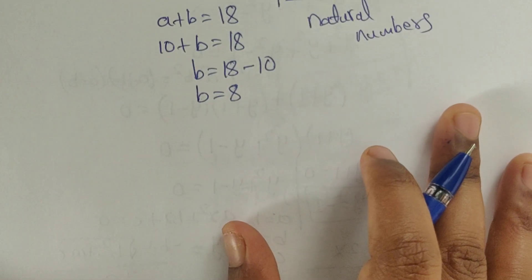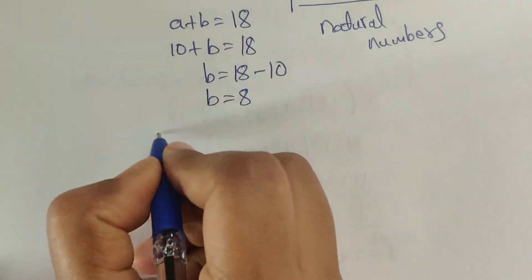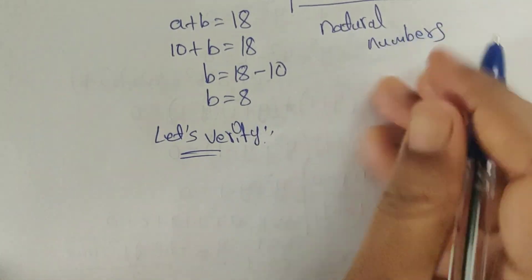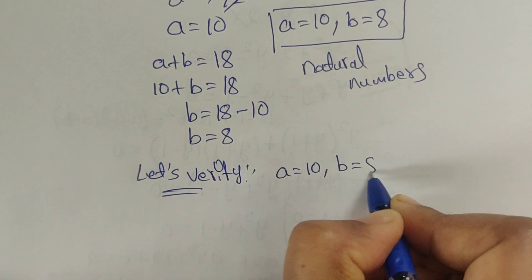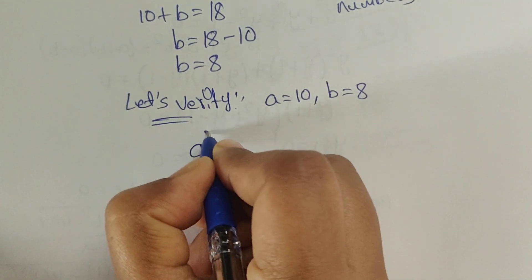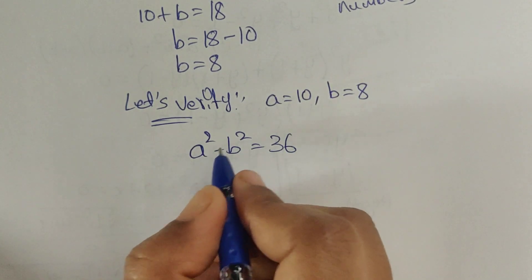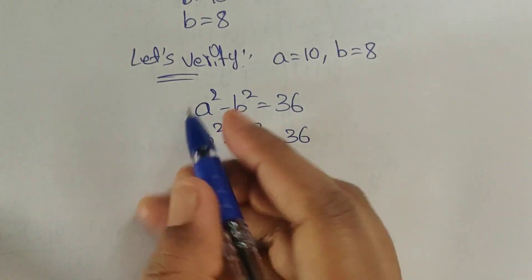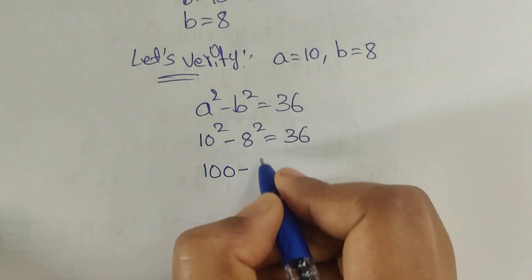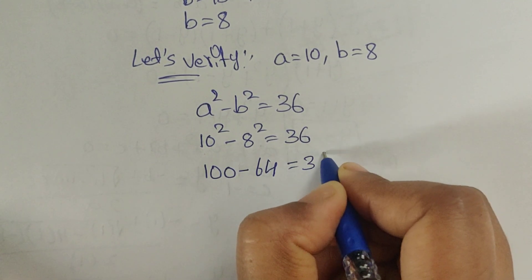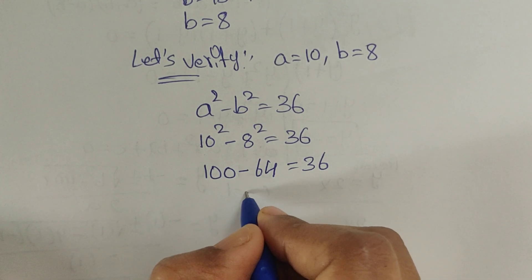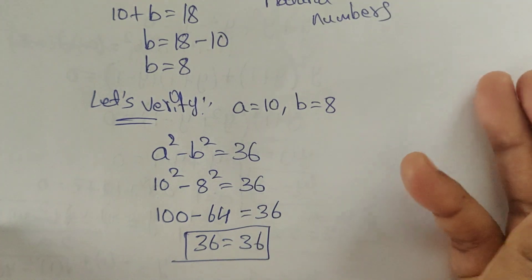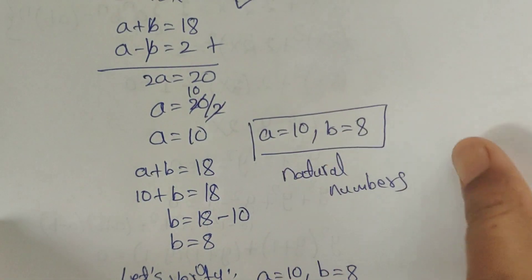Let's verify: with a equals 10 and b equals 8, we check a squared minus b squared equals 36. So 10 squared minus 8 squared equals 100 minus 64 equals 36. This is true! So the solutions are a equals 10 and b equals 8, and Case 4 is the right answer.